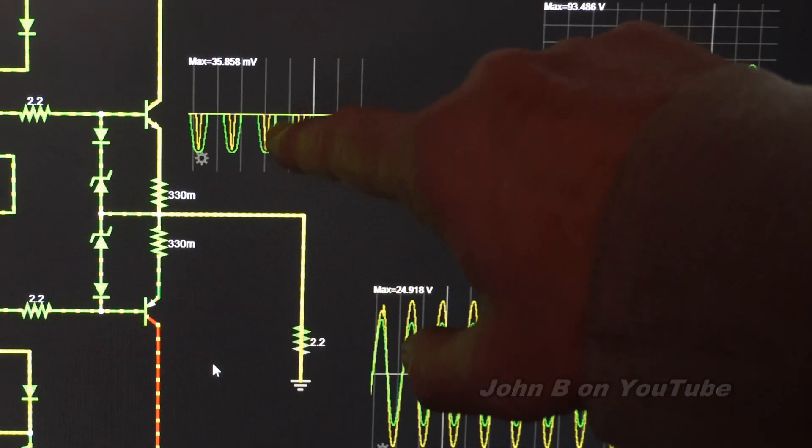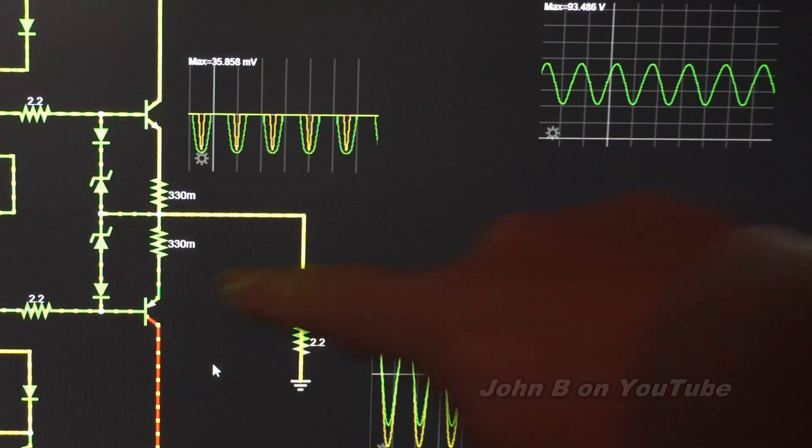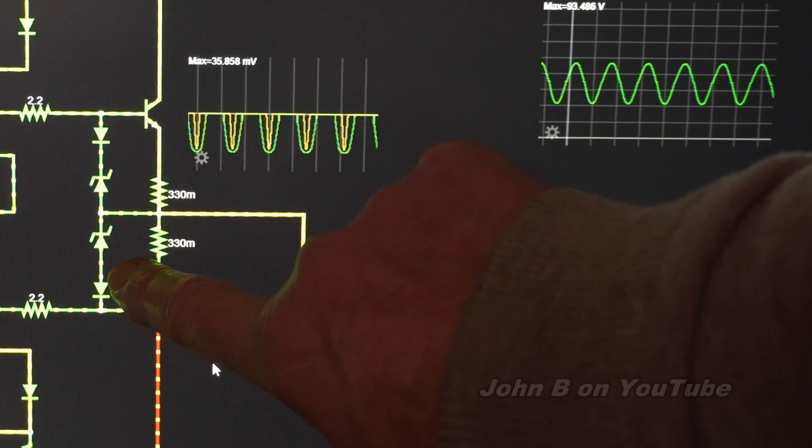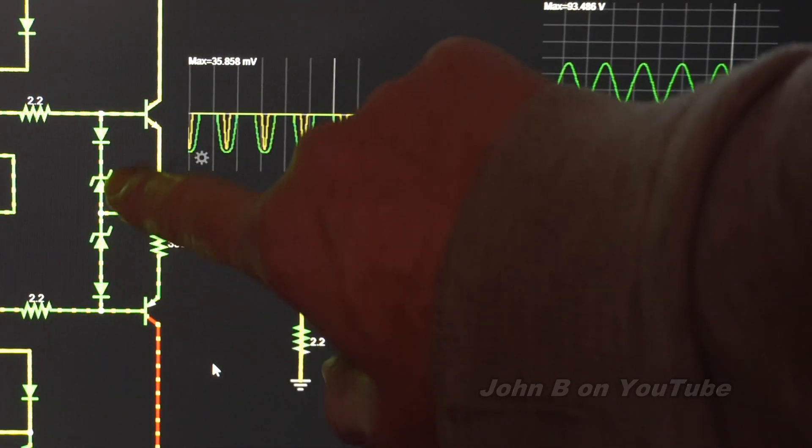And you can see the current here, we've got a lot of current flowing through these zener diodes. As you can see here, it seems to be faster there than that one.